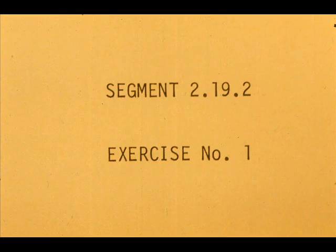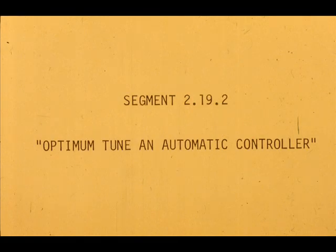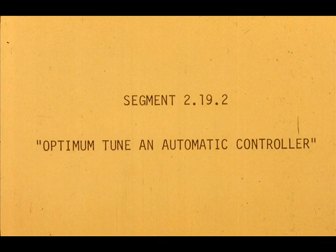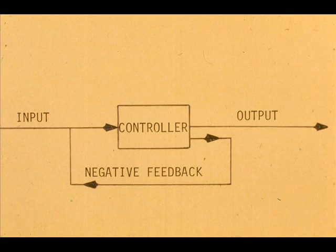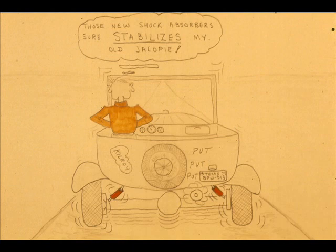Now work exercise one in your workbook. Before making mode adjustments, we will review what effect the adjustments have on the control system. Proportional action or gain is a negative feedback within the controller. It tends to cancel the effect of the input. It has a stabilizing effect on the system.